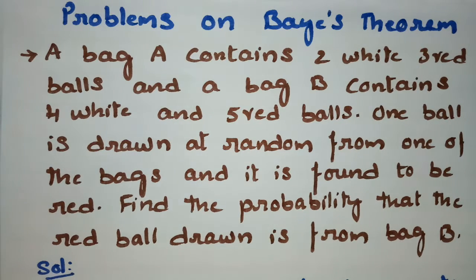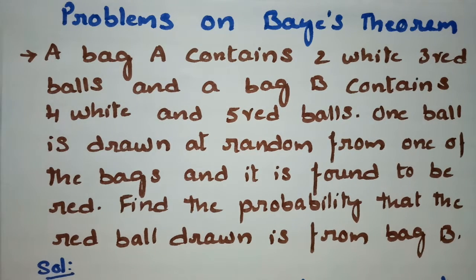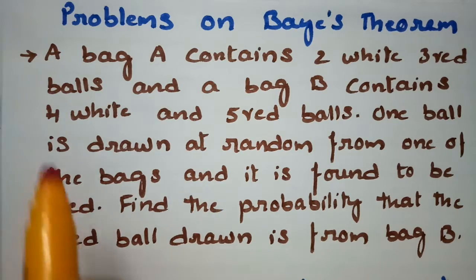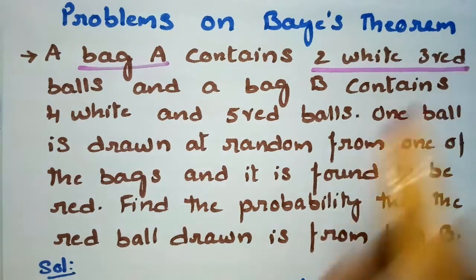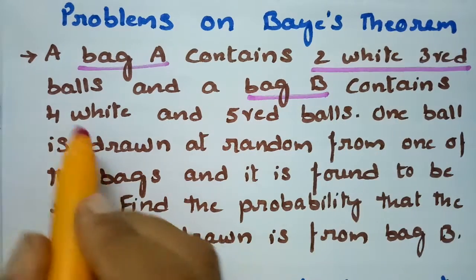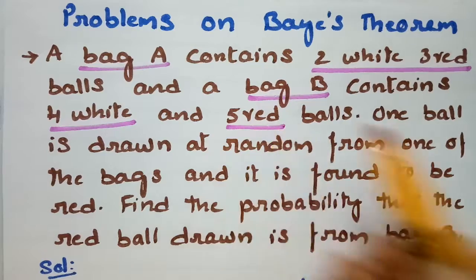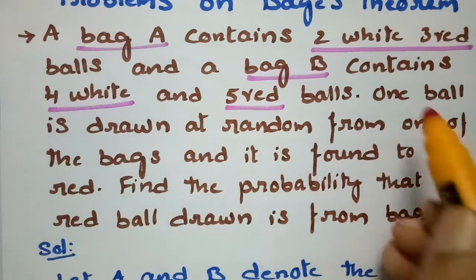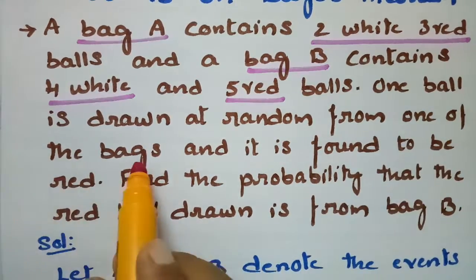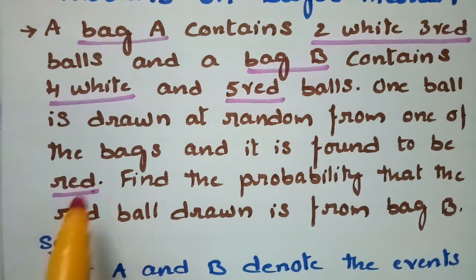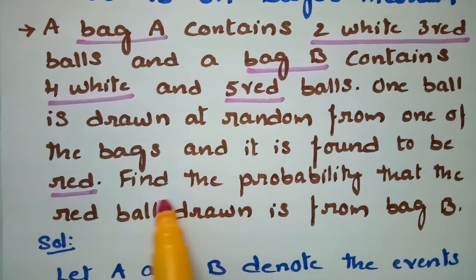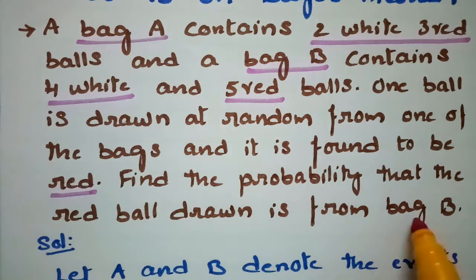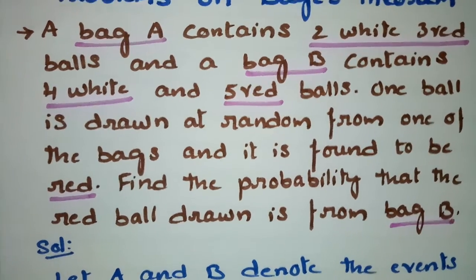Today's problem is on Bayes' Theorem — the most important related problem. Bag A contains two white and three red balls, and Bag B contains four white and five red balls. One ball is drawn at random from one of the bags and it is found to be red. Find the probability that the red ball drawn is from Bag B.